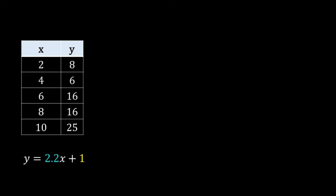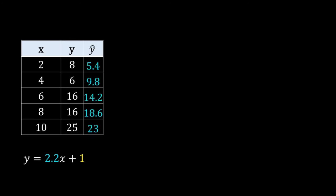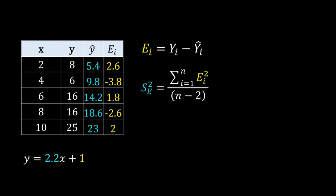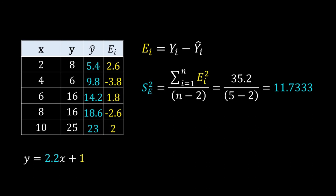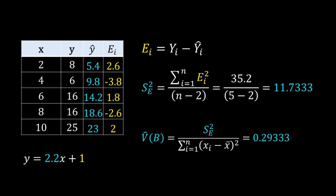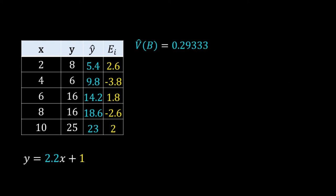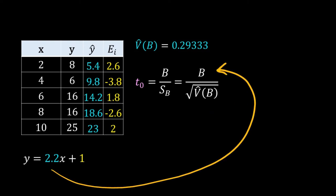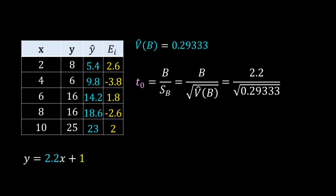Using the data and the regression line equation, I calculate y-hat for each value of x, then get the error for each data point. From the values of ei, I calculate the standard error of regression squared: se² = 11.7333. Using this value, I calculate the estimated variance of b. Note that in the denominator we have the sum of squared deviations of x from the mean — for our problem the mean of x is 6. The estimated variance of b is 0.29333. Now I have to calculate the t-value: with b and v-hat(b) known, the t-value for our null hypothesis is 4.062.